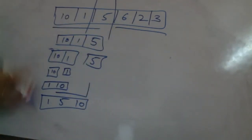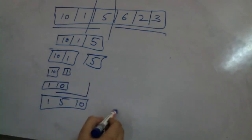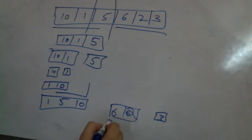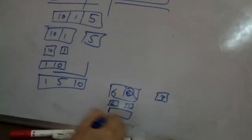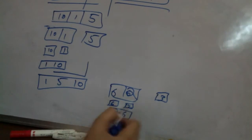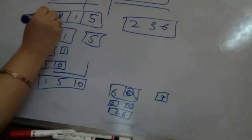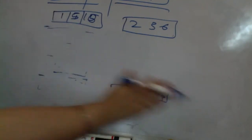Same will repeat here. After these, same will repeat here. It will be broken into 6, 2, and 3 as separate arrays. Then this will be broken into 6 and 2, then these will be merged as 2 and 6. Then 2, 3, and 6 will be merged. Then you will be having 2, 3, 6, and finally you will have 1, 5, and 10 — and you will have to merge them.